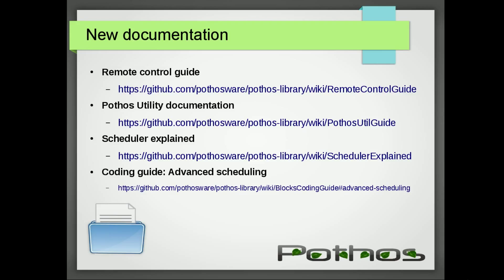We have a new page explaining how the scheduler works — covering scheduler internals like how we use the actor model, how threading works, how thread groups work, how we get data between blocks, and how we operate on buffer resources, messages, and things like that. I've also added a section to the coding guide called Advanced Scheduling, which will help you use Pothos in situations where your work function may have to wait on an external resource or leave the work function without producing or consuming anything but still needs to be called again.